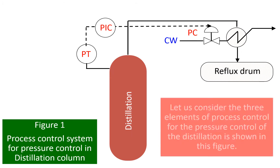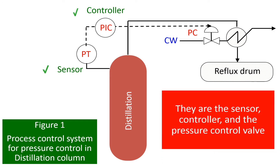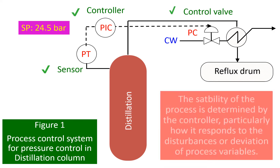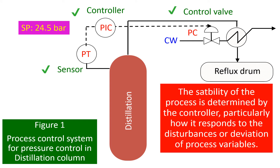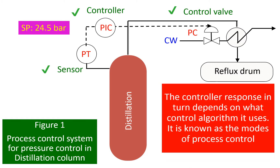Let us consider the three elements of process control for the pressure control of a distillation column in this figure. The three elements are sensor, controller, and the pressure control valve. The stability of the process is determined by the controller — particularly, how it responds to the disturbances or deviations of process variables. The controller's response depends on what control algorithm it uses, known as the modes of process control.